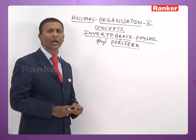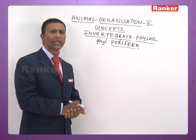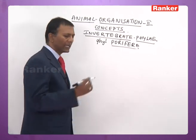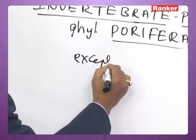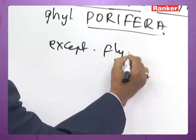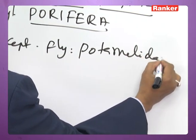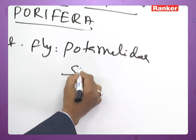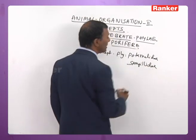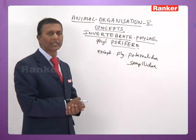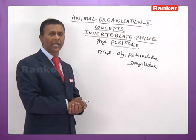Most of the Porifera are marine, sedentary, sac-like forms, except two families: family Potamilidae and family Spongillidae. Except these two families, the rest of the Porifera are marine, sedentary, sac-like forms.